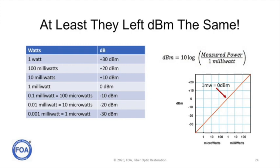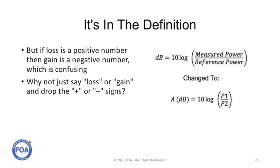So that's why an optical loss test set, or OTDR, defines loss as a positive number and gain as a negative number. And if you do the same measurement with meter and source, you'll find that loss is negative, gain is positive. It's all in the definition.